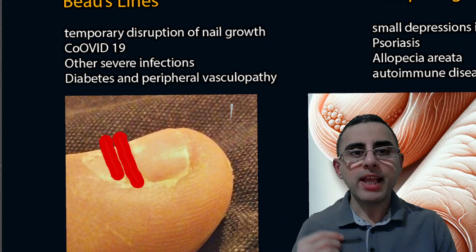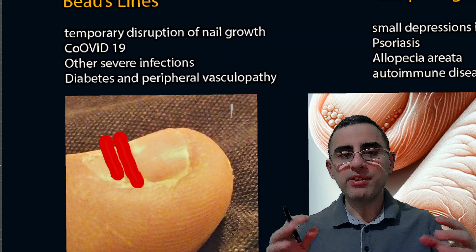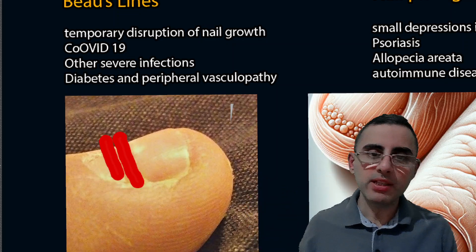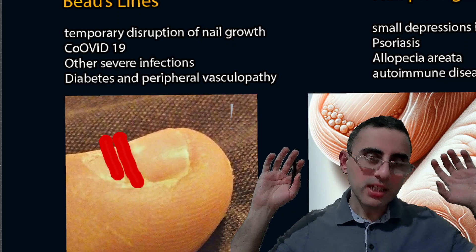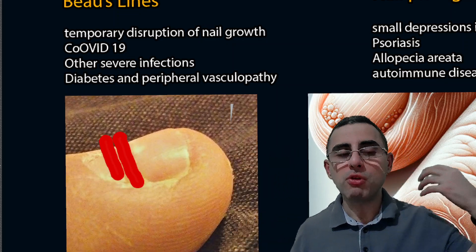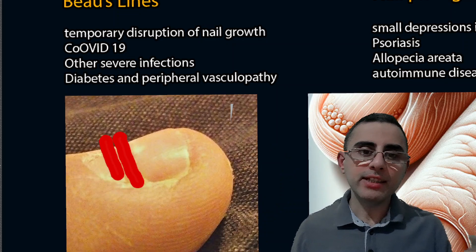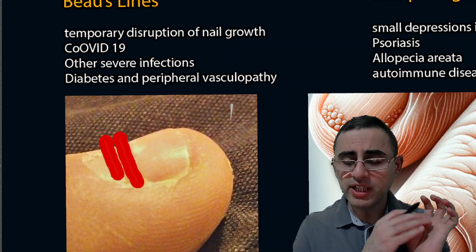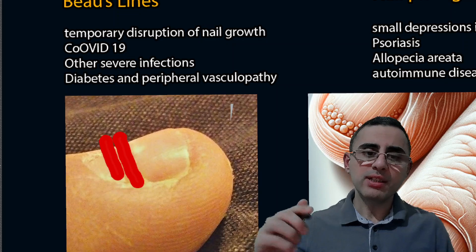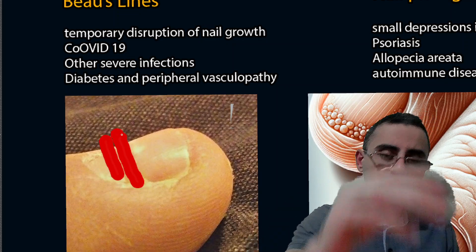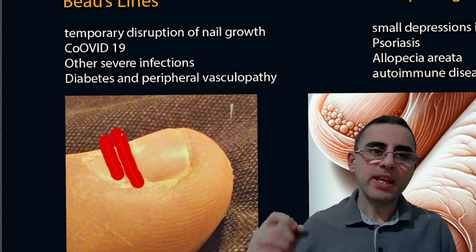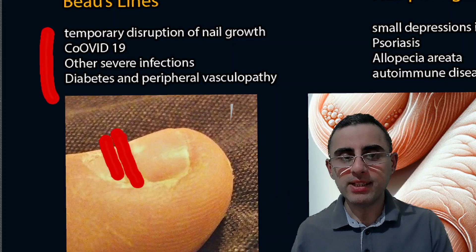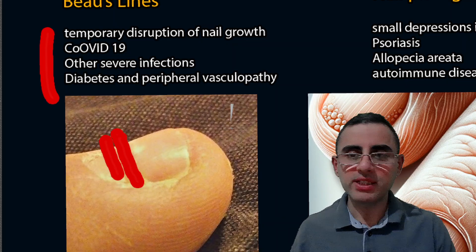Beau's lines refer to horizontal indentations of the nails. This happens when there is a temporary disruption of nail growth, usually when the body is fighting a severe infection — for example, COVID-19 — and fewer resources are available for nail growth. It can also be a sign of diabetes or peripheral vasculopathy.